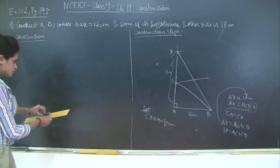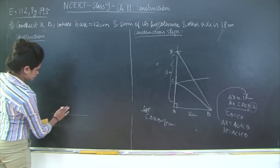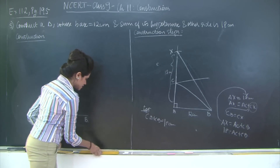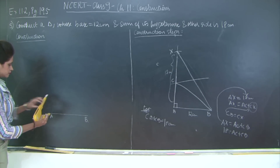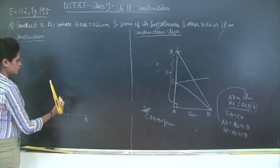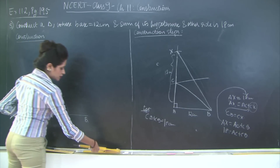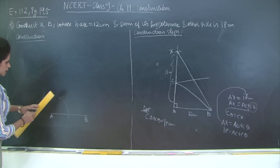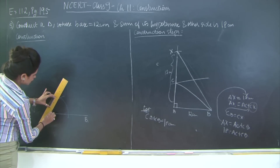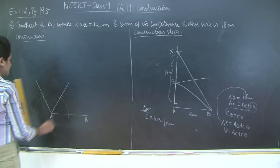Now let us do the construction. First I'm going to draw the base AB equal to 12 centimeters. Then I draw a right angle at A. With A as center, cut an arc on AB, then divide this arc into three equal parts. Since these arcs are equal in length they subtend equal angles at center A. This entire angle from A is 180 degrees, so each part is 60 degrees.